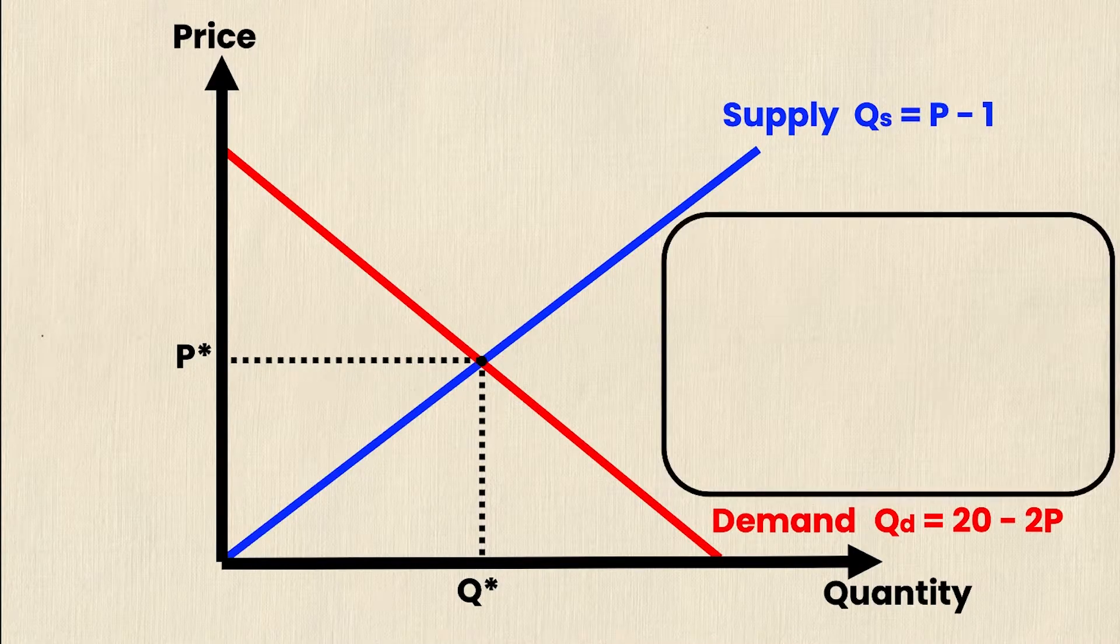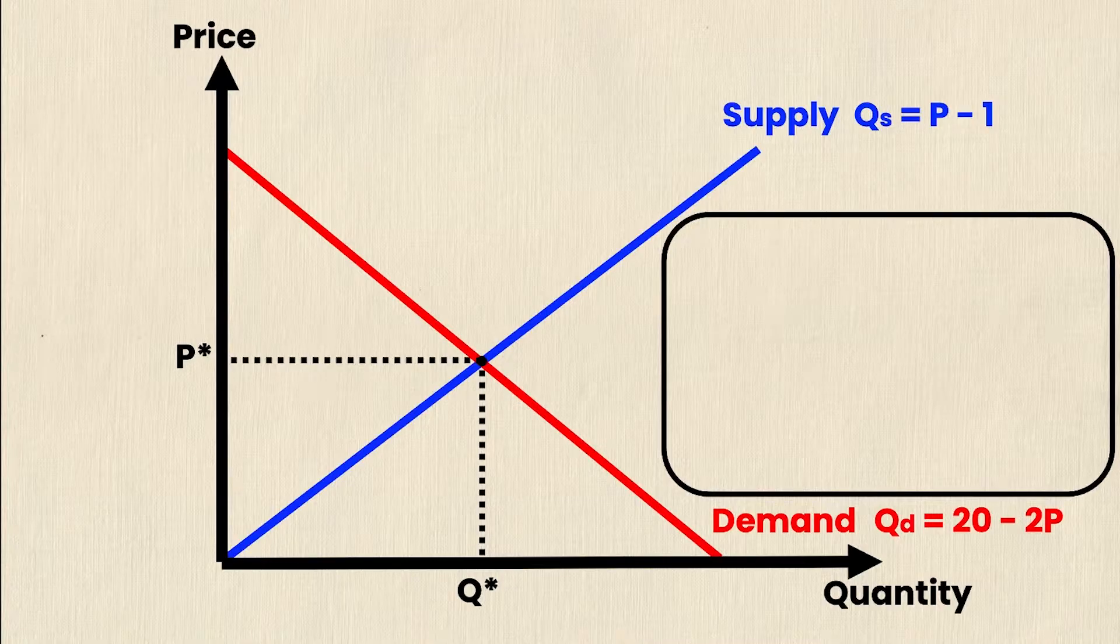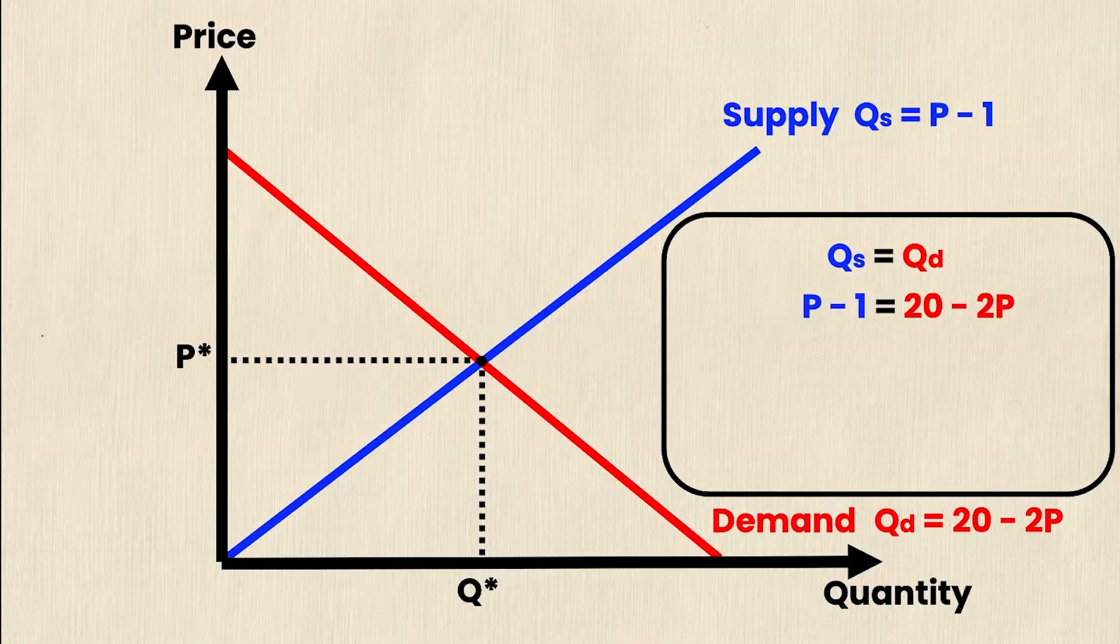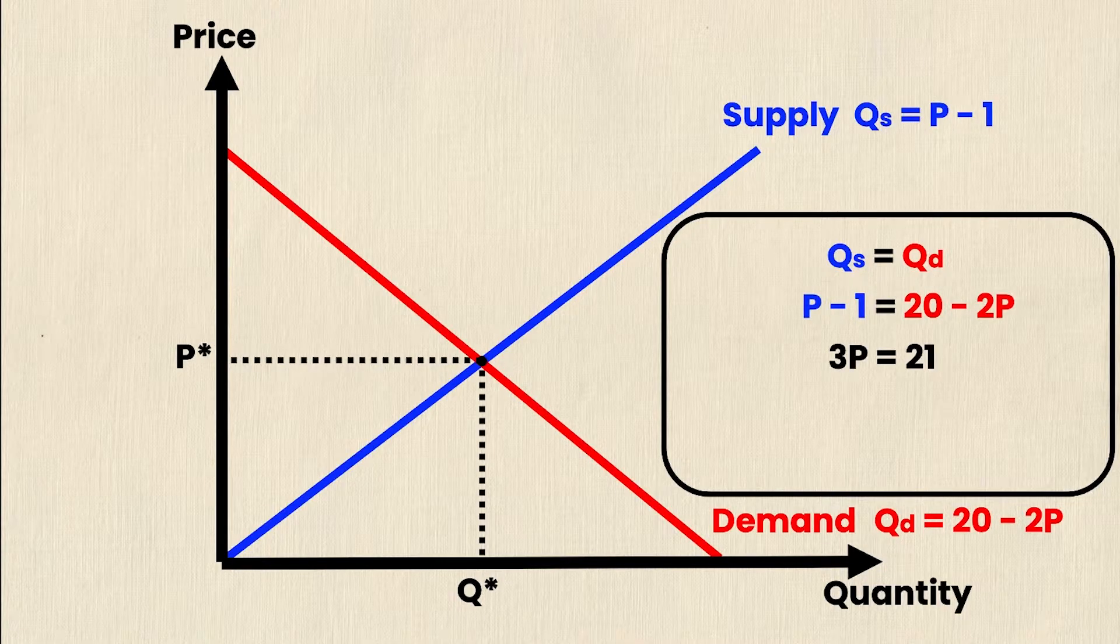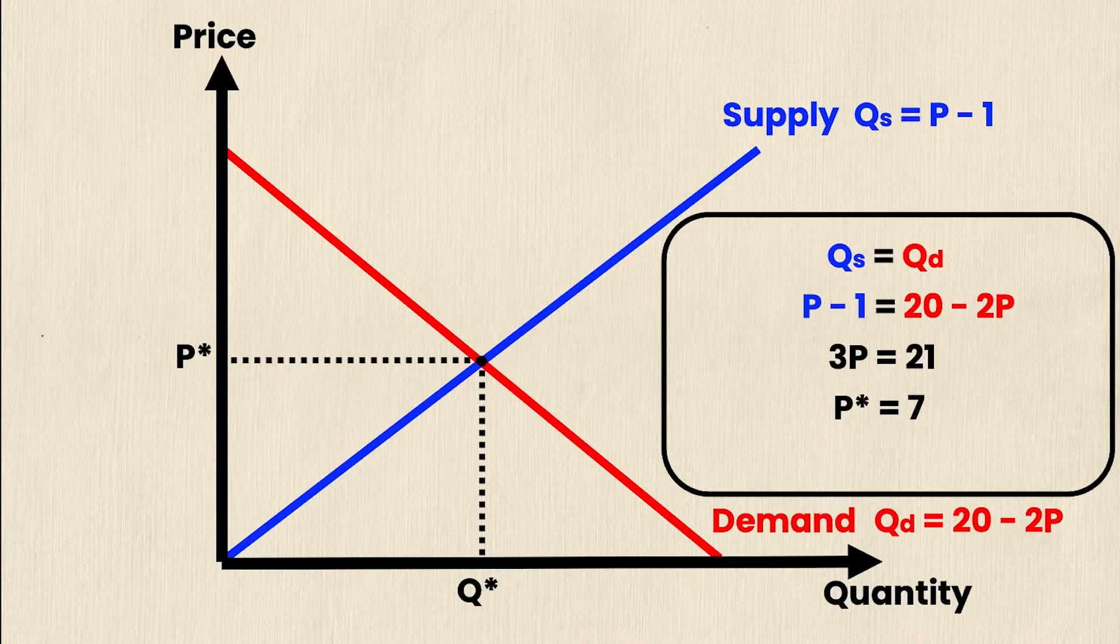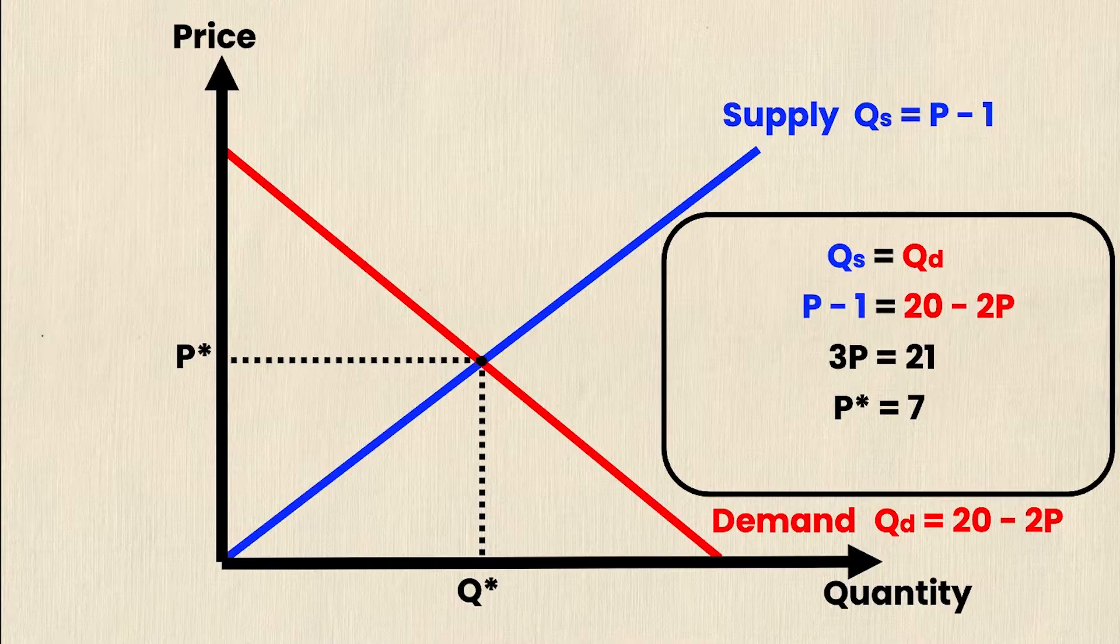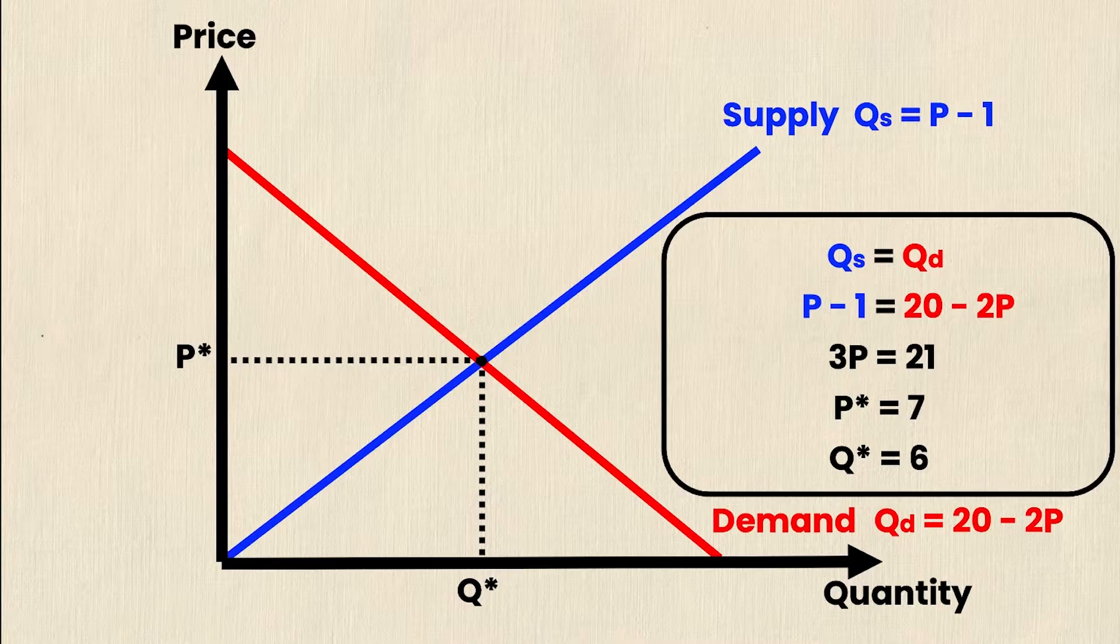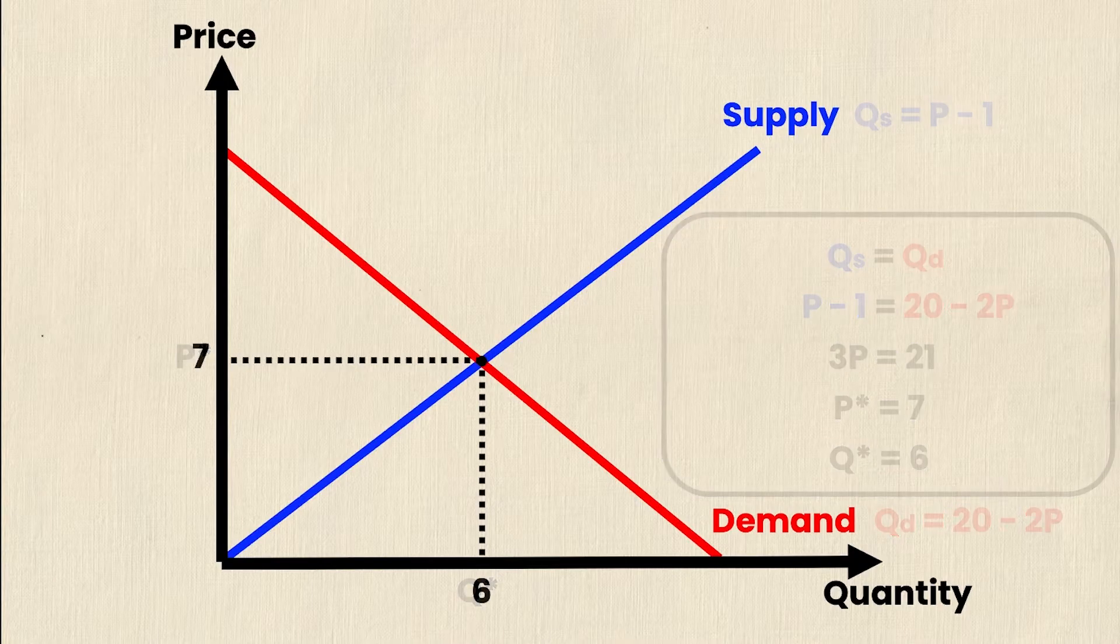So my first step is going to be calculating the equilibrium. And I can do this by setting qs equal to qd. And if I do that, I get p minus 4 equals 20 minus 2p. Rearranging this a little bit, I get 3p is equal to 24. And then finally, p star must be equal to 8. And if I substitute that back into the supply or demand equations, I will get q star equal to 4.